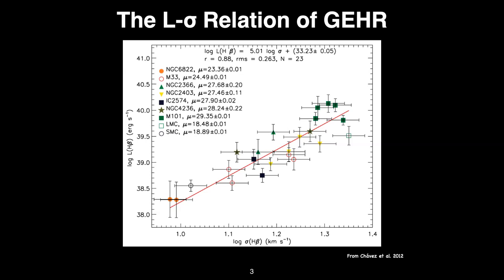There are more points in the plot than in the legend because there is more than one region per galaxy. For instance, NGC 6822 has two regions, and the LMC has 30 Doradus. So there are repeated points representing more than one region per galaxy.